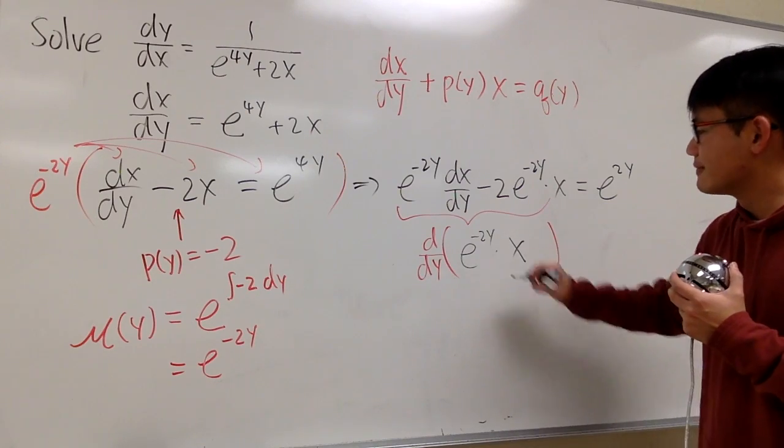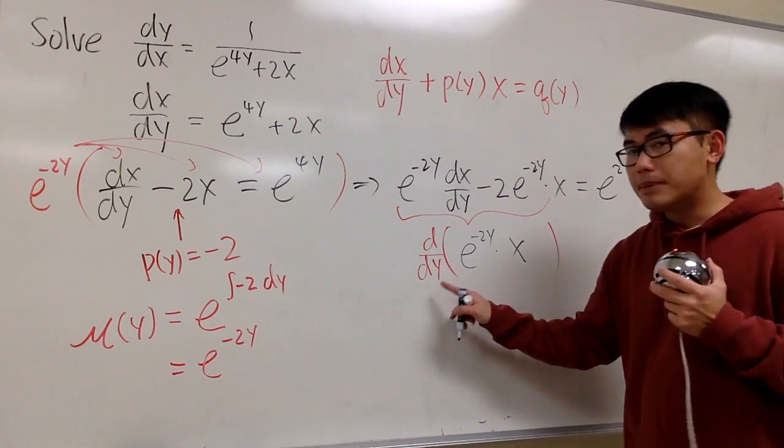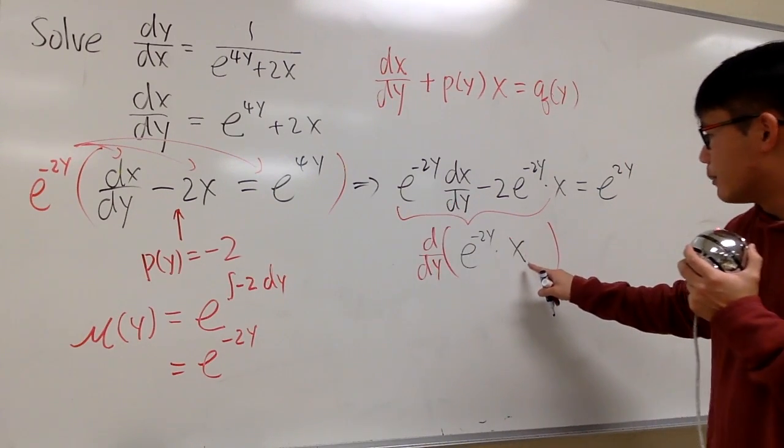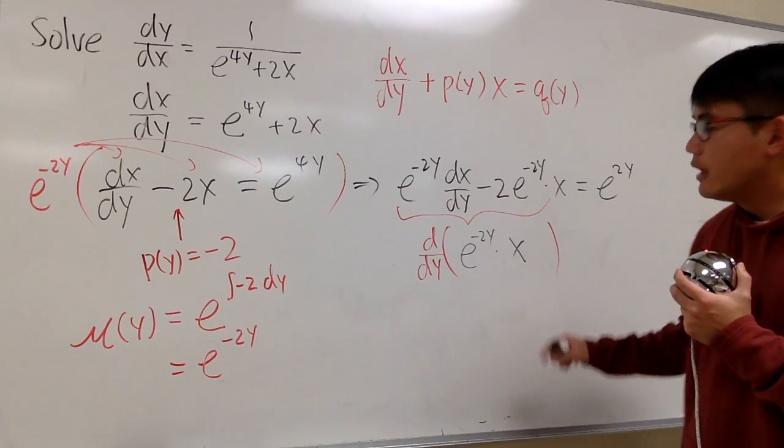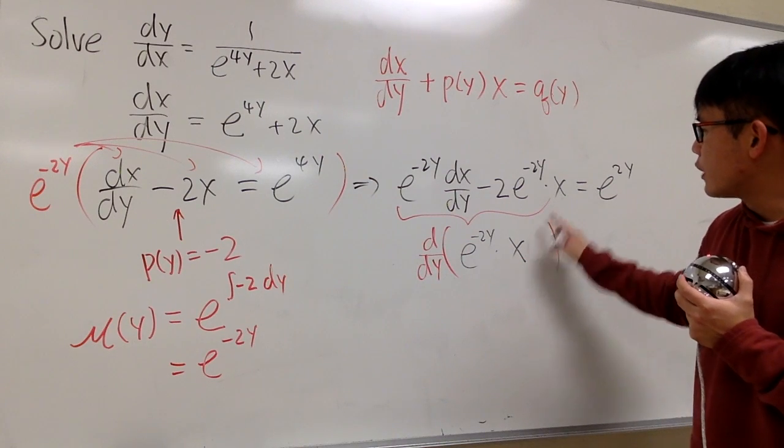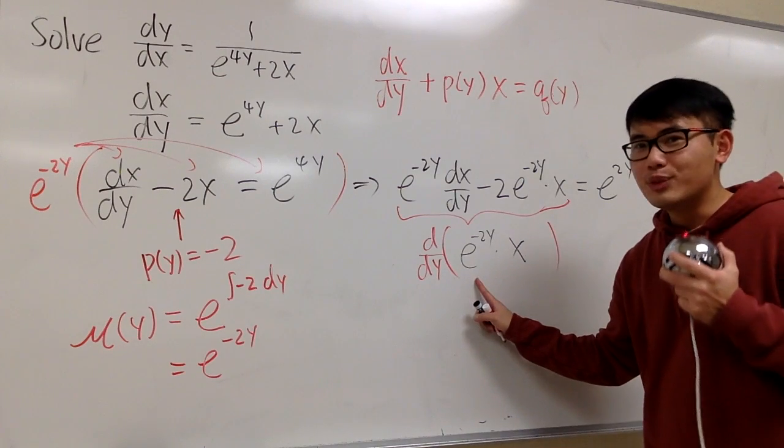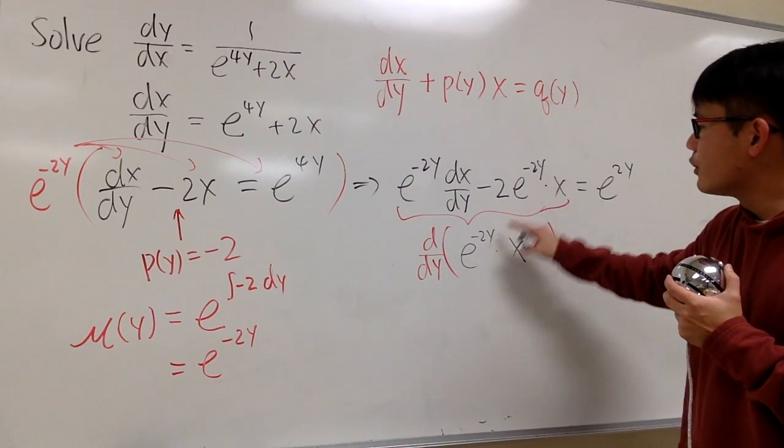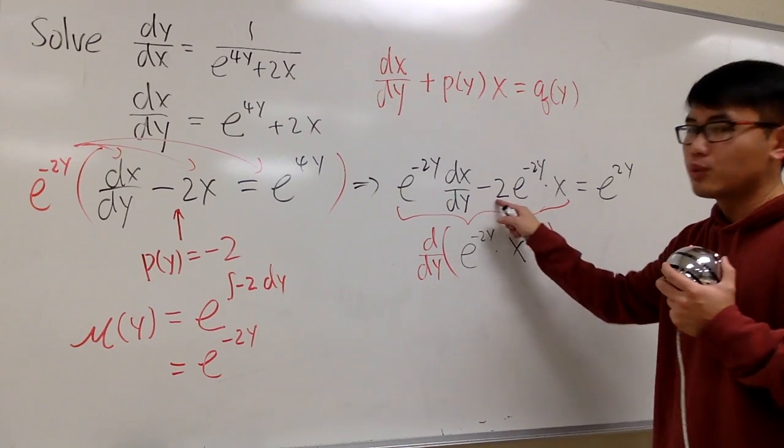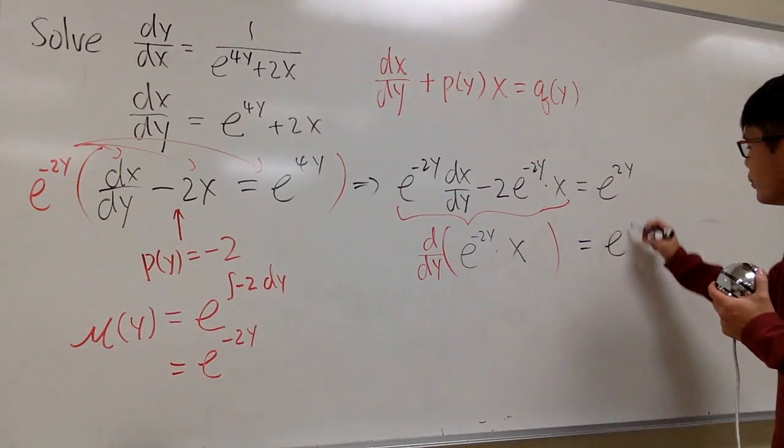Do a real quick check. Derivative of this, with respect to y, x is the function of y. We keep the first function, and we multiply by the derivative of x, which is dx/dy, and we add right here, and we keep the second function, which is x. And let me just write this down better. And we differentiate this with respect to y. So we repeat this, and don't forget, we multiply by negative 2. That's the derivative of negative 2y. This is why it's negative 2. So this is great, right? And this is equal to e^(2y).